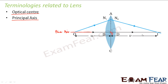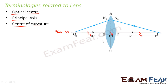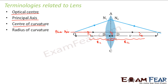Since a lens has two spherical surfaces, it has two centers of curvature. For the first spherical surface there is a center of curvature C1, and for the second spherical surface there is a center of curvature C2. The corresponding radii of curvature are known as R1 and R2 respectively.